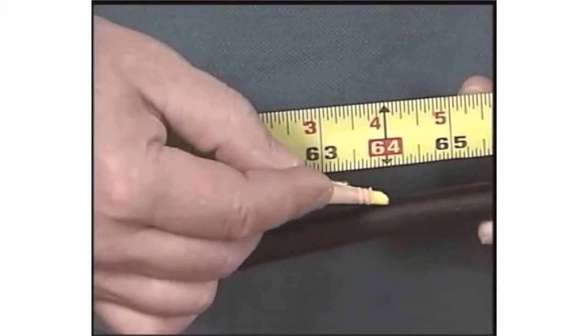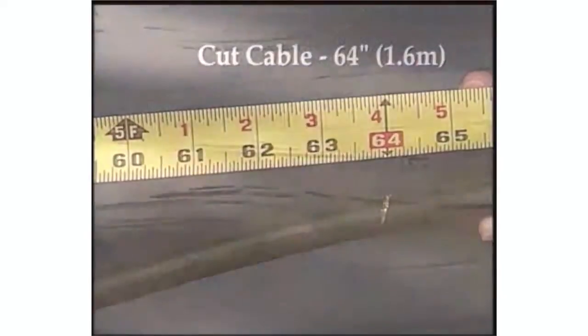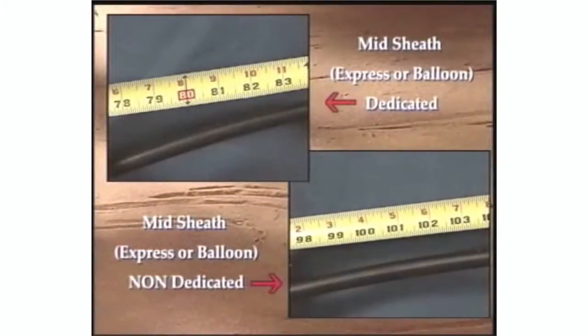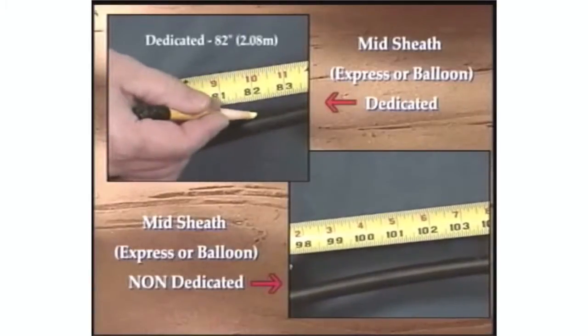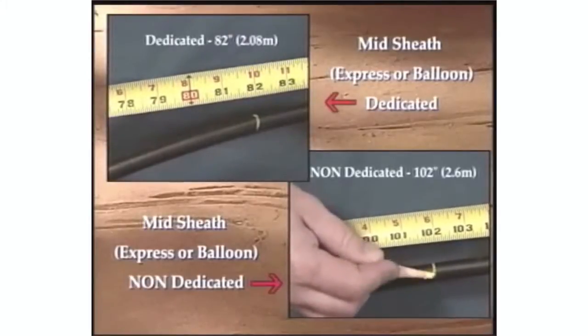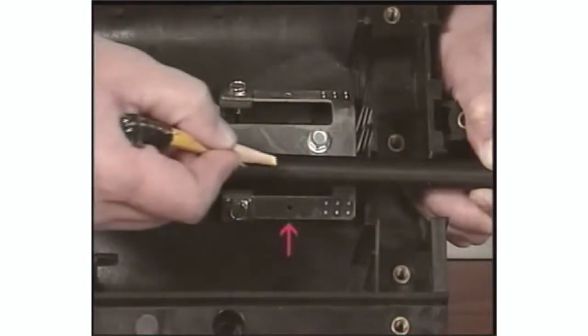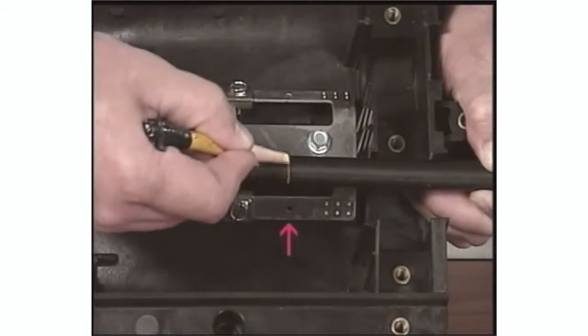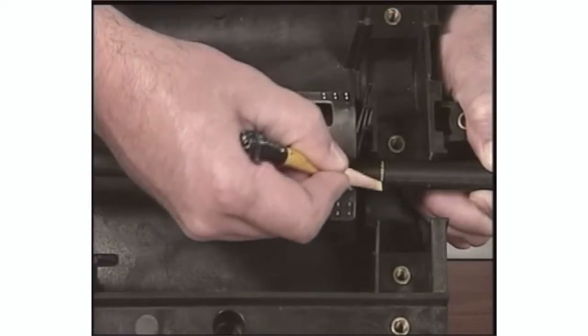For cut cable configurations, the sheath opening should be a minimum of 64 inches. For midsheath, express, or balloon configurations, the sheath opening must be 82 inches for dedicated splice points or 102 inches for non-dedicated applications. This applies to ribbon cable applications as well. Align the cable with the hole in the strength member bracket and mark for cable opening. Then mark the cable for your grommet location.